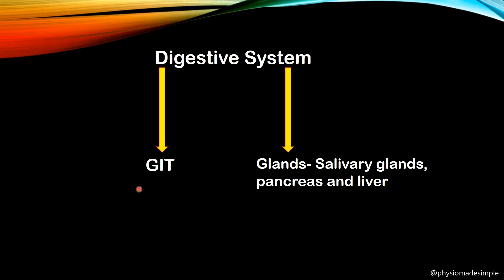The GIT consists of: mouth or oral cavity, pharynx, then esophagus, stomach, small intestine, large intestine, rectum and the anus. These structures together form the GIT, which is the entire continuous tube-like structure of the gastrointestinal tract.